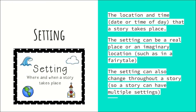The setting is where and when a story takes place — the location and time. It could be a specific date or the time of day. The setting can be a real place or an imaginary location. In a fairy tale, they're going to use an imaginary one — 'a long time ago in a kingdom far, far away.' The setting can also change throughout a story, so you can have multiple settings. It might start in a forest and end in a castle. Think of Alice in Wonderland — she goes to many different places during her dream. Stories take place across a variety of locations and times.